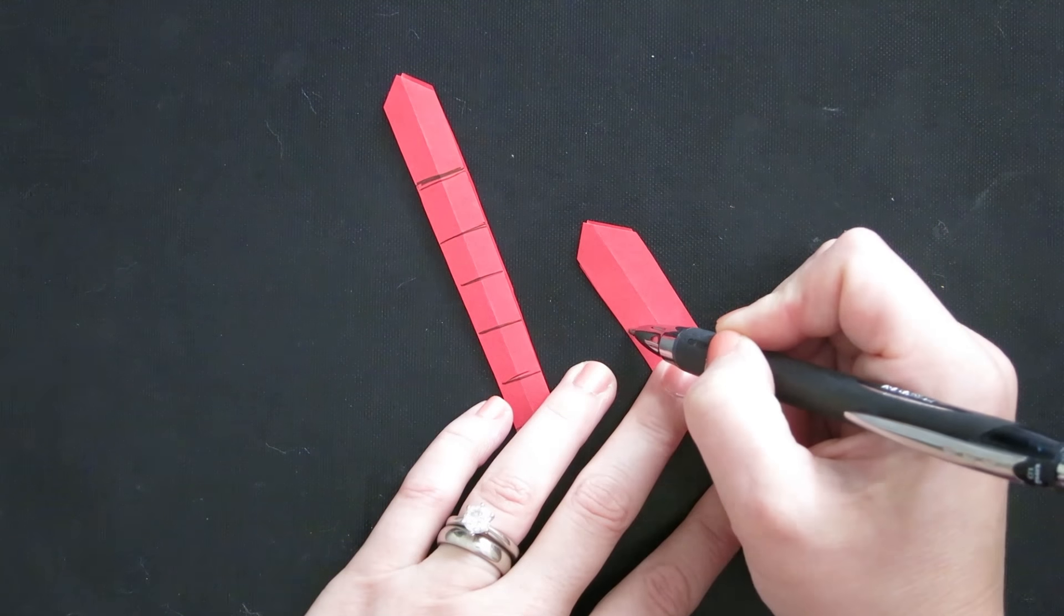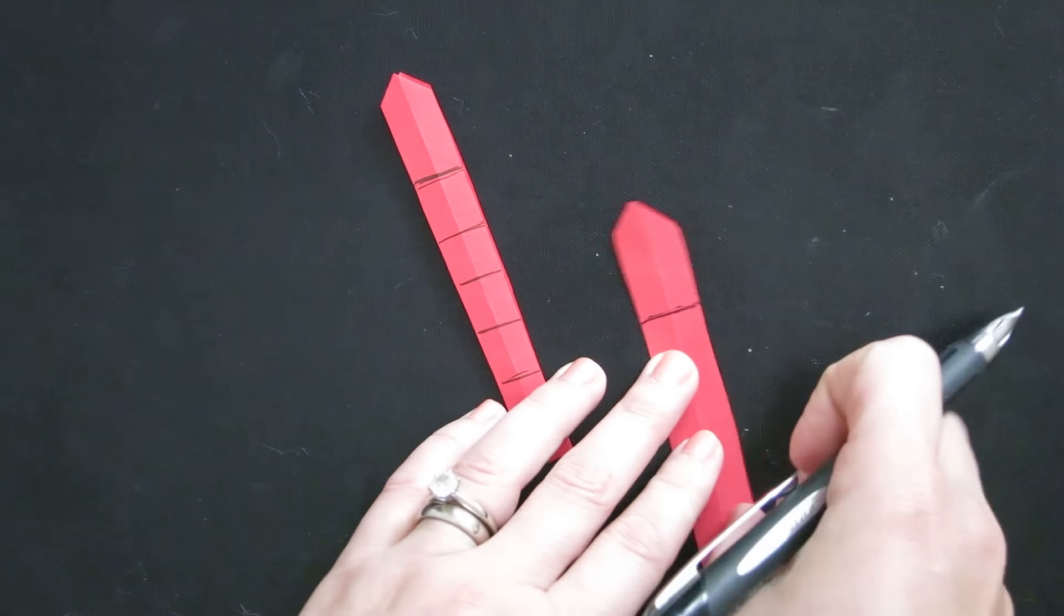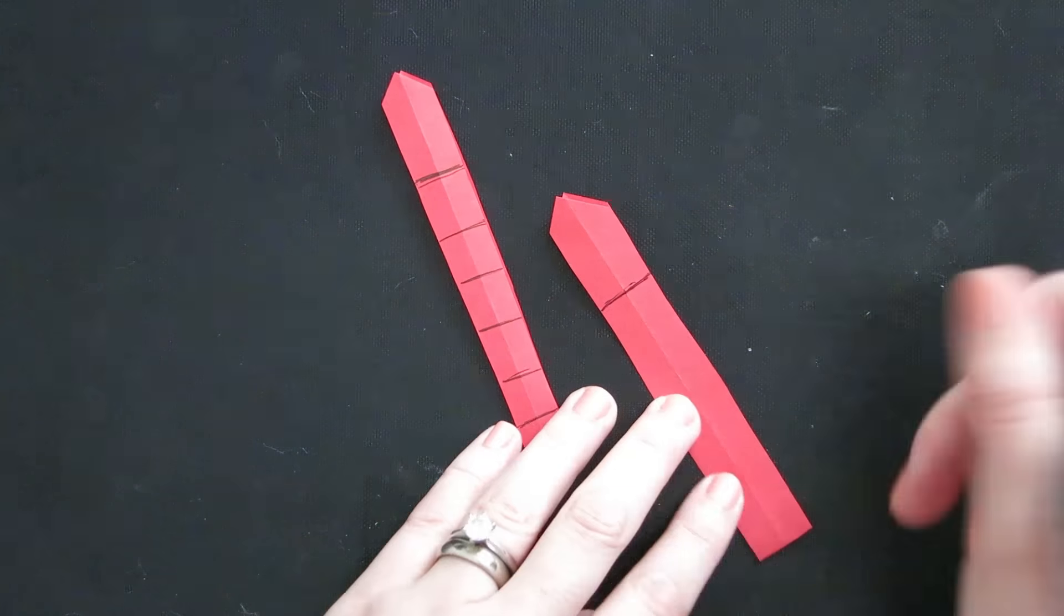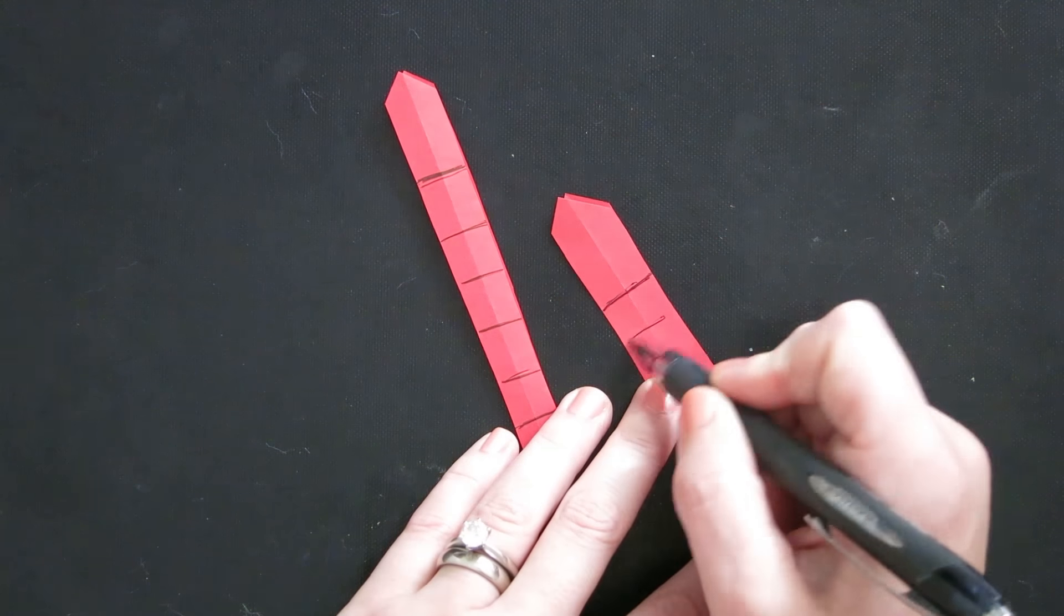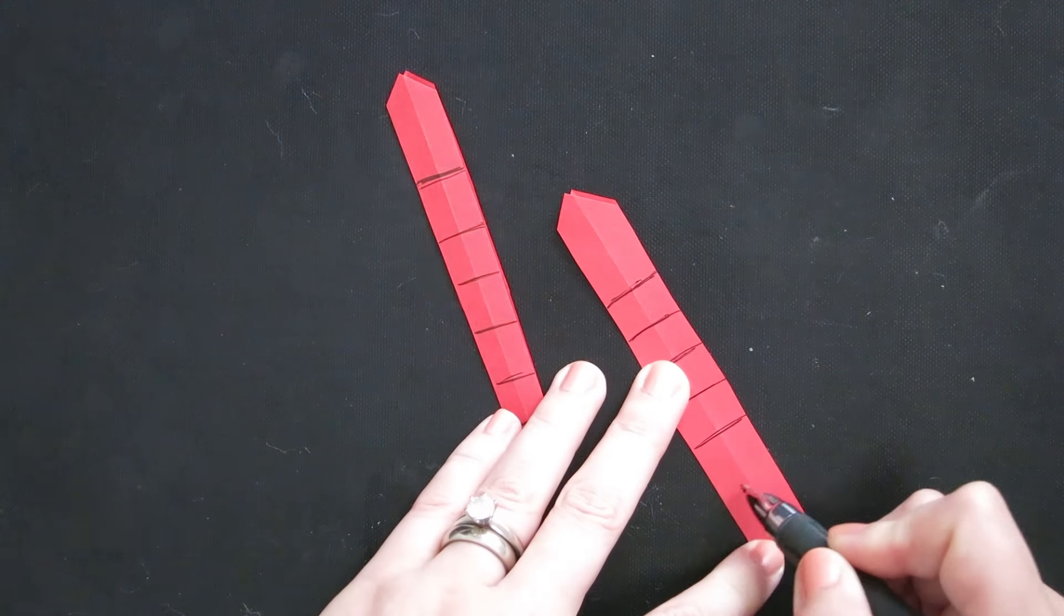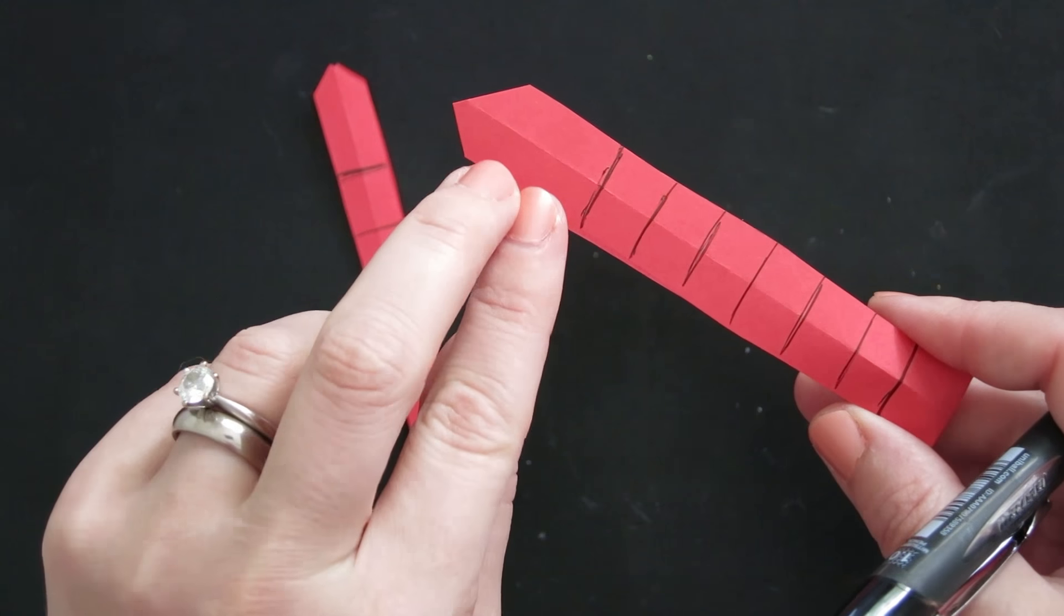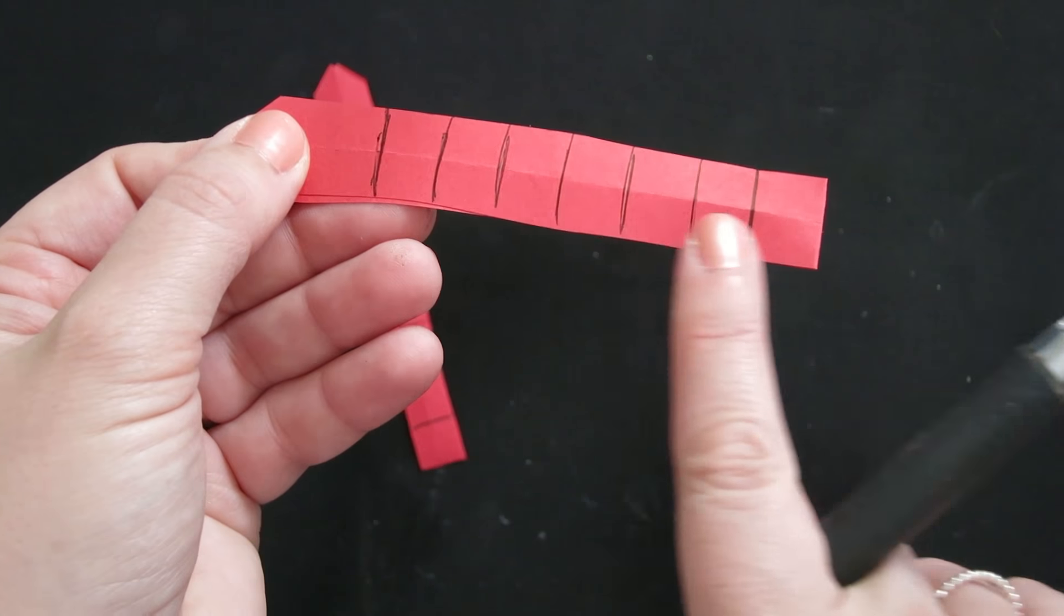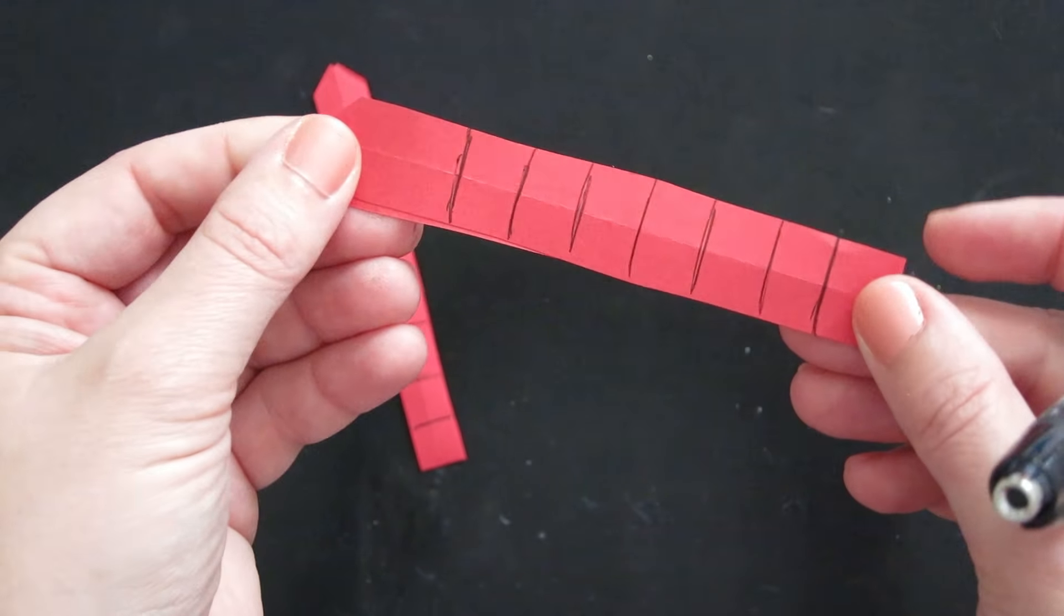I'm actually going to put maybe an inch from the bottom like that. So this is a six inch sheet of paper and then I'll go this way. So I have about twice the size of one of these little spaces at the top and then evenly spaced all the way to the bottom roughly.